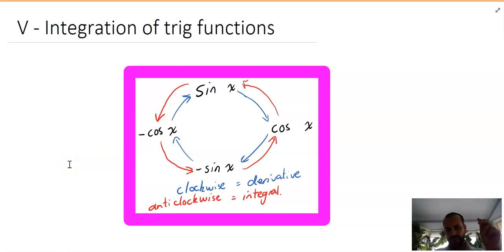We're going to do integration of trig functions. Here before we get started I'm going to show you this diagram. I don't love it but a lot of people use it. If you want to derive a sine function, you follow your blue lines here so the derivative of sine is cos, the derivative of cos is negative sine, the derivative of negative sine is negative cos, and the derivative of negative cos is sine.